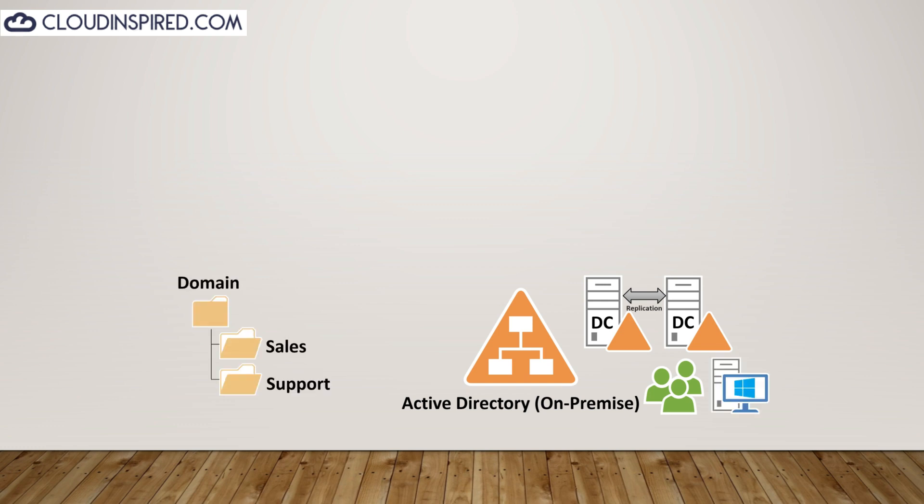Logically, organizational units — OUs — can be structured within AD using Active Directory Users and Computers to create OUs like folders, forming a structure such as a company name with departments like sales, support, and administration. Objects like users, groups, and computers are then grouped into each OU to form this structure.